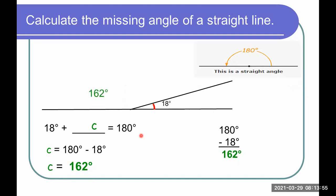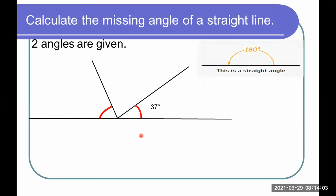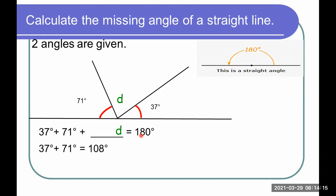Now what if there were three angles? If two angles are given, step one: write the mathematical statement — 37 plus 71 degrees plus D equals 180. Then add 37 plus 71, which equals 108. After that, subtract from 180: 180 minus 108 gives you 72 degrees. So therefore, angle D is 72 degrees.